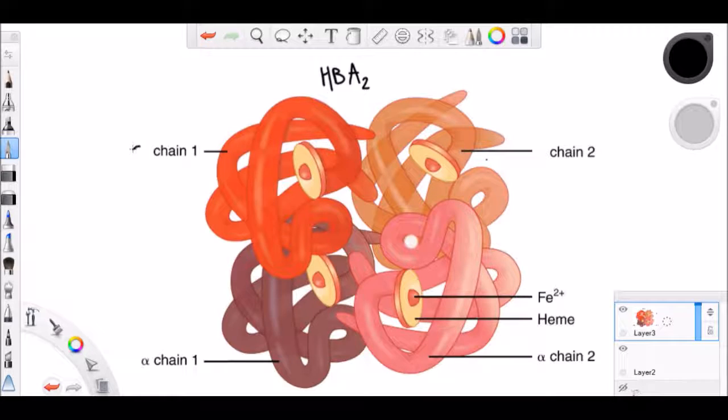Hemoglobin A2 is the minor adult hemoglobin consisting of two alpha and two delta. Hemoglobin fetal consists of two alpha and two gamma chains. And it is important to note that the beta and gamma chains are closely related.